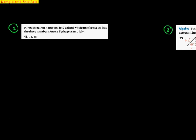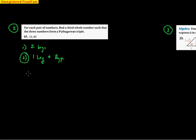Number two: for each pair of numbers, find a third whole number such that the three numbers form a Pythagorean triple. They give you two of the three sides. Options are: they could give you the two legs, or one leg and the hypotenuse. When the numbers are spread out — like 13 and 85 — the 85 is likely the hypotenuse. Using a² + b² = c², let 13 be a leg (b) and 85 be the hypotenuse.